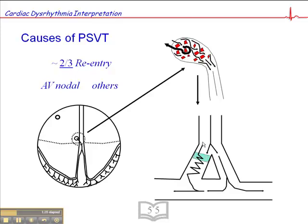Looking at this diagram, what happens in re-entry is that there is a wave of depolarization that travels in this direction and it encounters an area of non-conductive tissue like we see in the AV node. If the circumstances are right — either because of ischemia, disease, other circumstances, or just an underlying abnormality in the AV node — the wave of depolarization goes off in this direction, but encounters a group of cells here which are still in their refractory period.